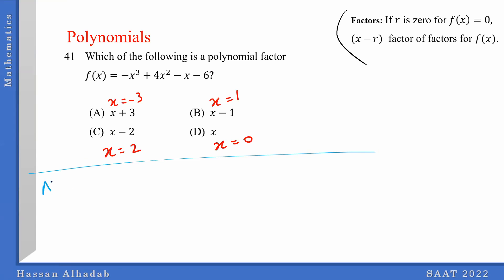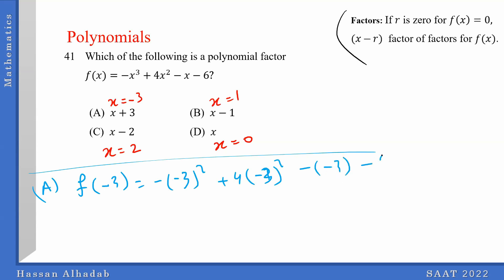Let's start with option a, plugging in negative 3. So f(negative 3) is (negative 3) cubed plus 4(negative 3) squared minus (negative 3) minus 6. That's negative 27 plus 36 plus 3 minus 6. Since all terms are positive or adding up, this can't be 0 — so a is wrong.